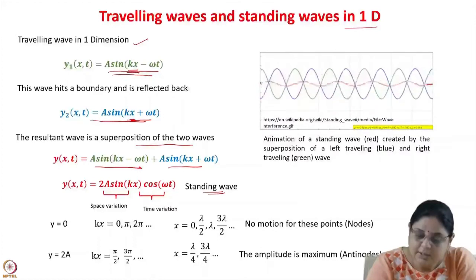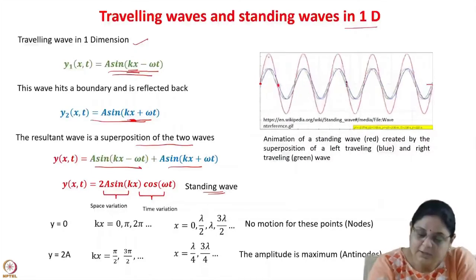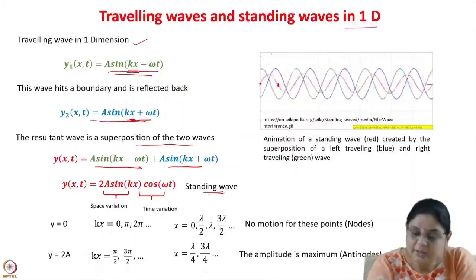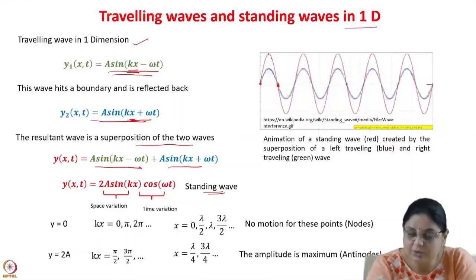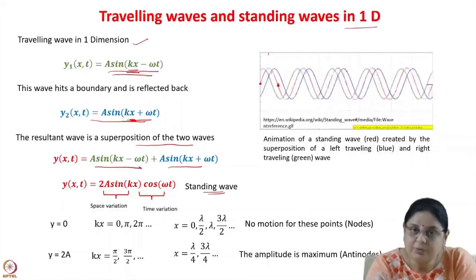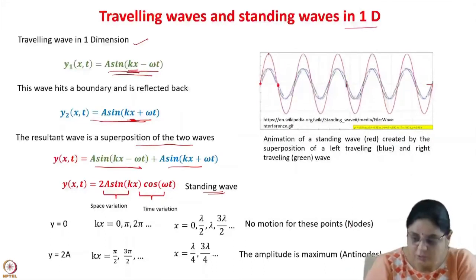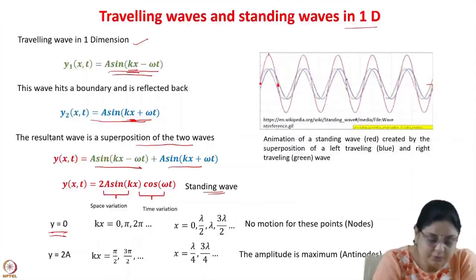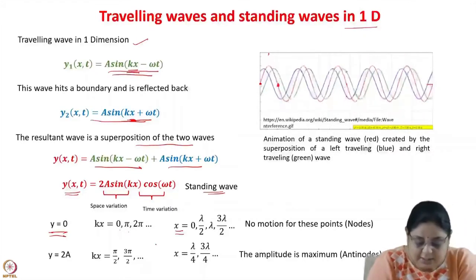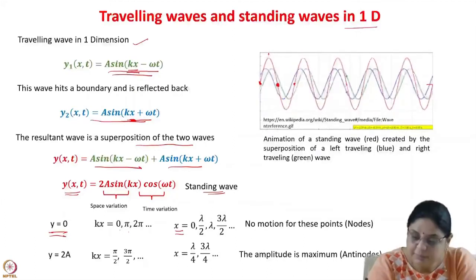In the standing wave there are locations where the amplitude is 0, known as nodes, and locations where the amplitude is maximum, known as antinodes. All points oscillate at the same frequency but with different amplitudes. For nodes (y = 0), we get kx = 0, π, 2π, …, so x = 0, λ/2, λ, 3λ/2, and so on.